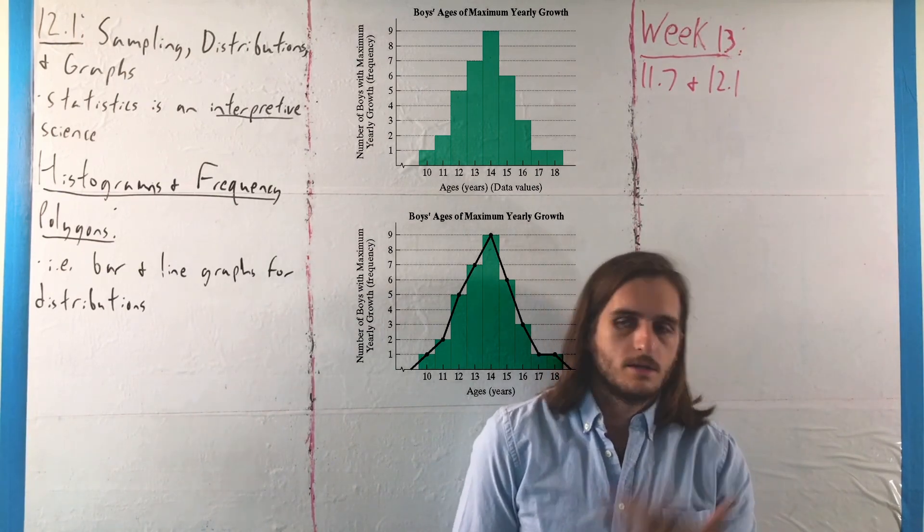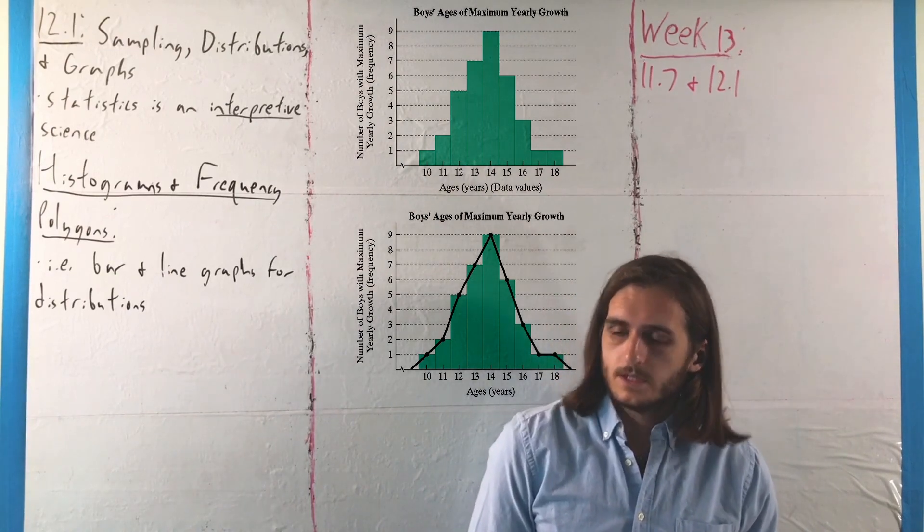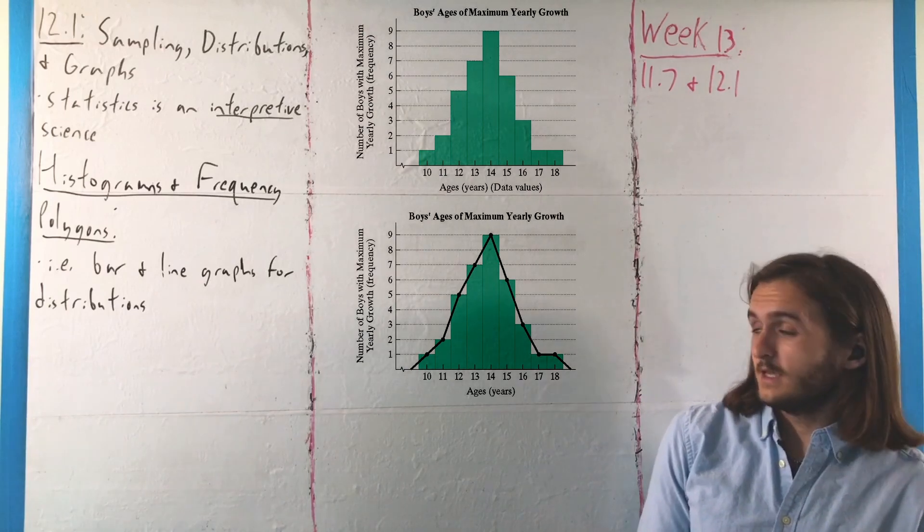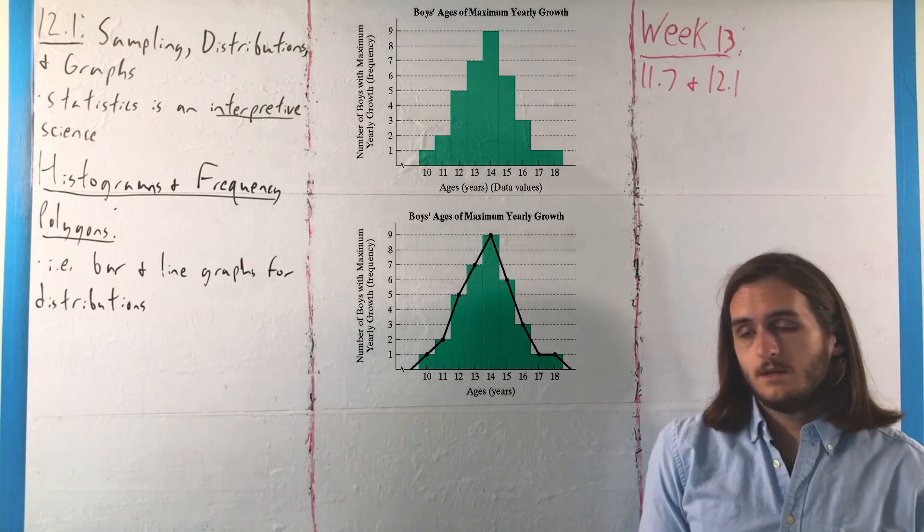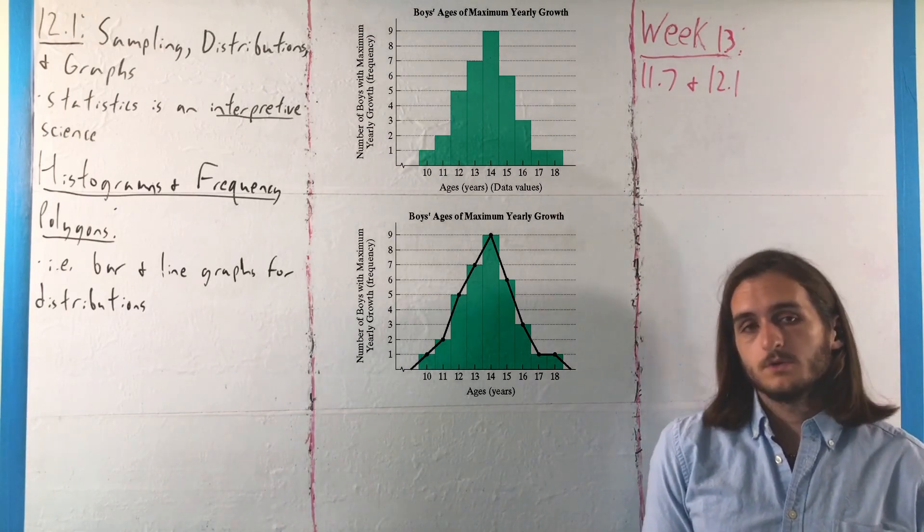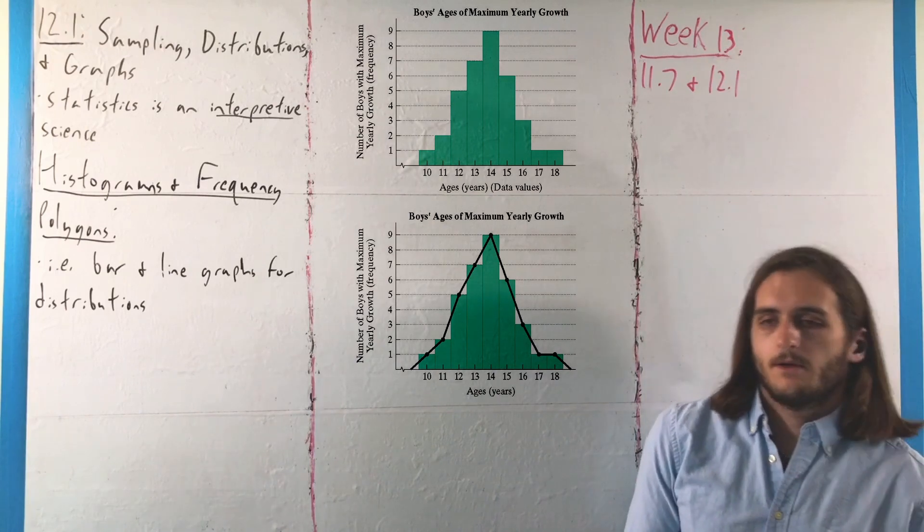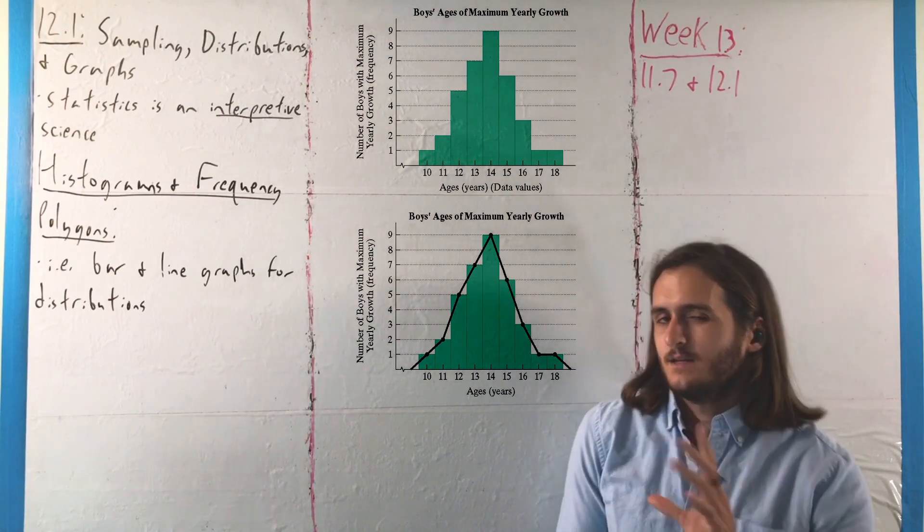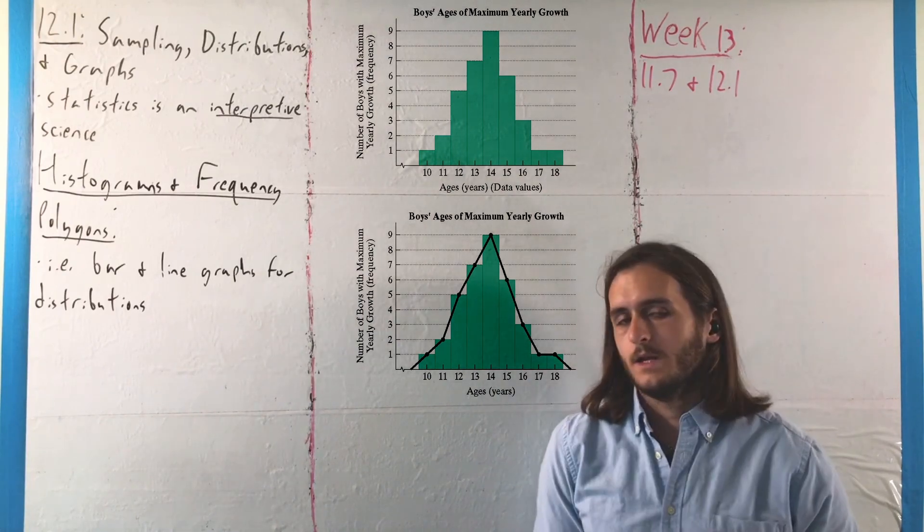But the point is, these are two pictures we can make where you can more clearly see the pattern in the data set. In particular, you can see the pattern says that 14 is where most boys have the most growth, with some amounts of things on either side of it. That's a special pattern that we have in a histogram, but not the sort of thing we're going to worry about right here, right now.